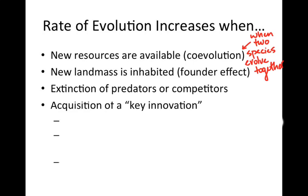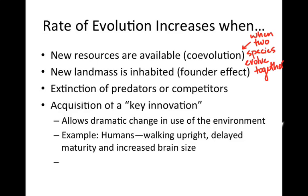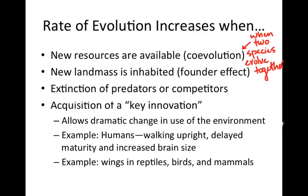You could also evolve or acquire a key innovation — a new trait that allows the population to drastically change its role in the environment. Examples include humans with opposable thumbs, the ability to walk upright, and delayed reproductive maturity that allowed for increased brain size. Wings have also been a key innovation for different groups. Basically, any change that allows a population to use resources in new and novel ways can be seen as a key innovation, and that changes the rate of evolution.